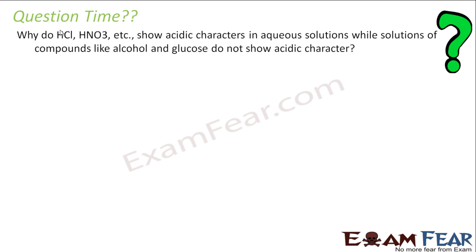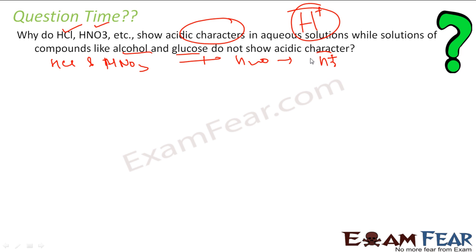So next question is why is hydrochloric acid, nitric acid show acidic character in aqueous solution while the compounds like alcohol, glucose, they don't show acidic property. The reason here is again, for acidic property you need H+. So you take HCl, HNO3, anything you take, nitric acid, these guys when you put in water, they give H+ ions. But if you see glucose and alcohol, they have hydrogen, but when you put this in water, they do not dissociate.